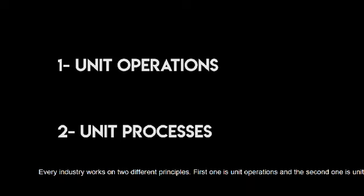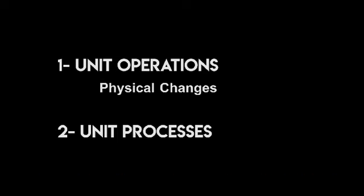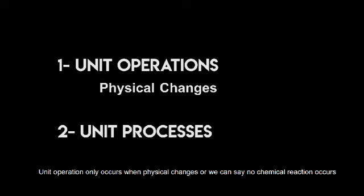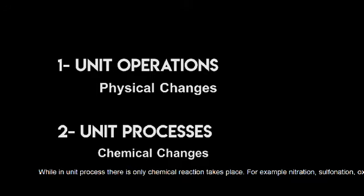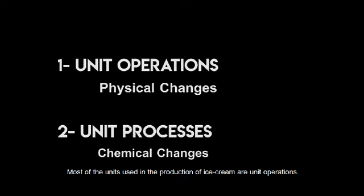Unit operations are those where only physical changes occur — or we can say no chemical reaction takes place. Evaporation, distillation, drying, size reduction, and crystallization are examples of unit operations. While in unit processes, chemical reactions take place — for example, nitration, sulfonation, oxidation, and reduction of compounds.